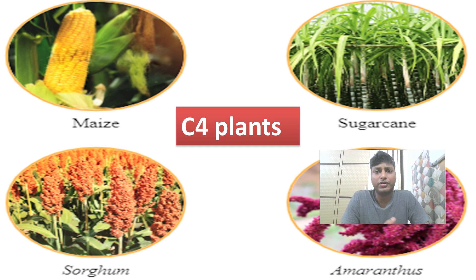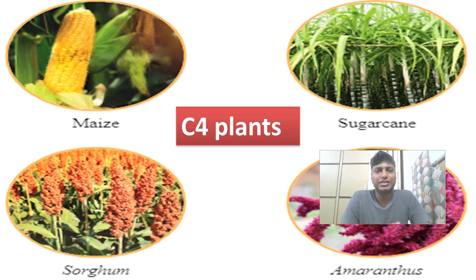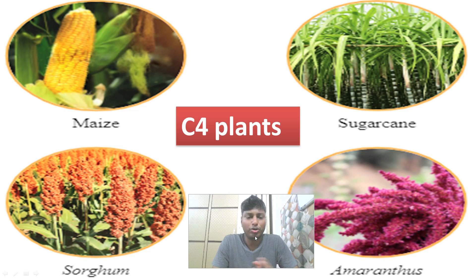We first need to understand what are C4 plants, what are C3 plants, what is the difference between C4 and C3 plants, and what are C2 plants as well. As far as C4 plants are concerned, here are some examples: maize, sugarcane, sorghum, and amaranthus — these are all different examples of C4 plants.